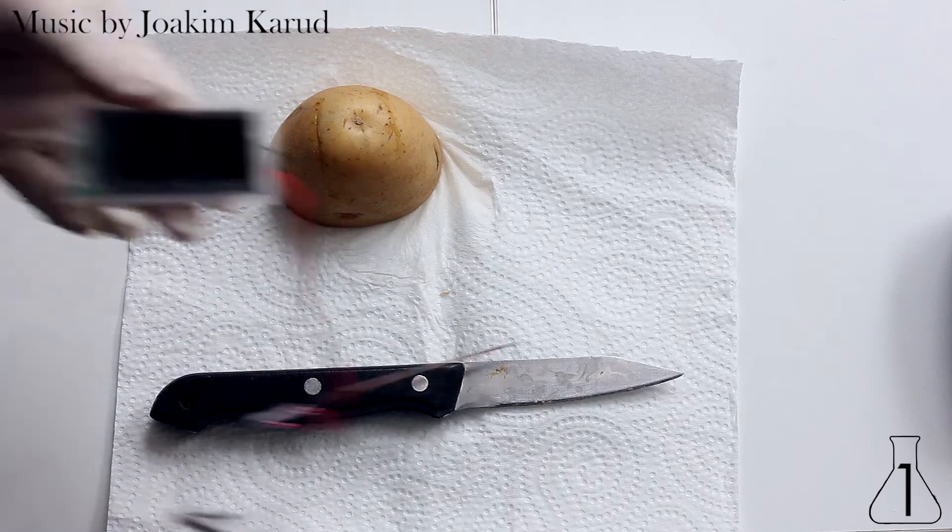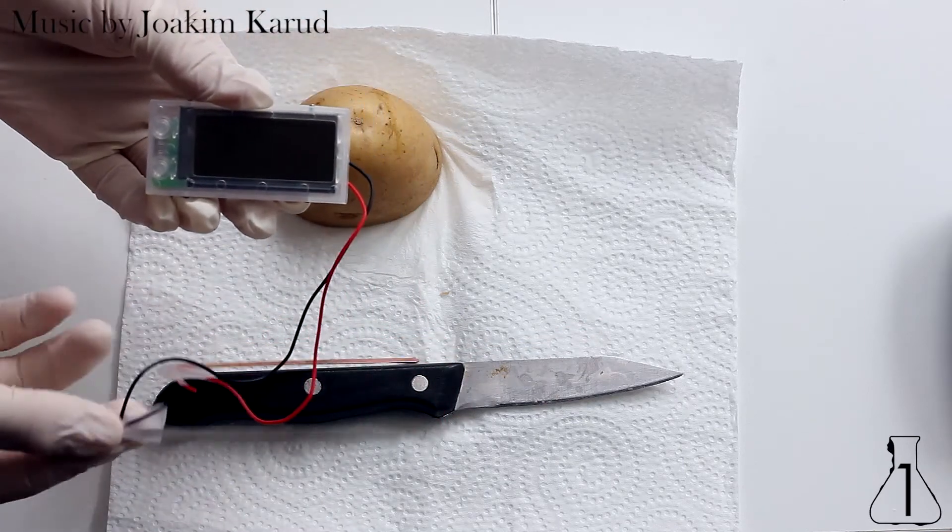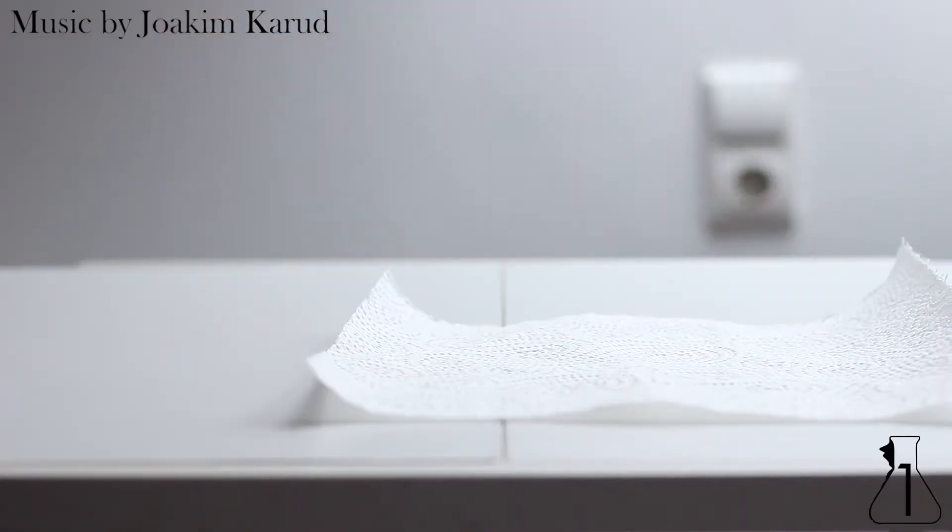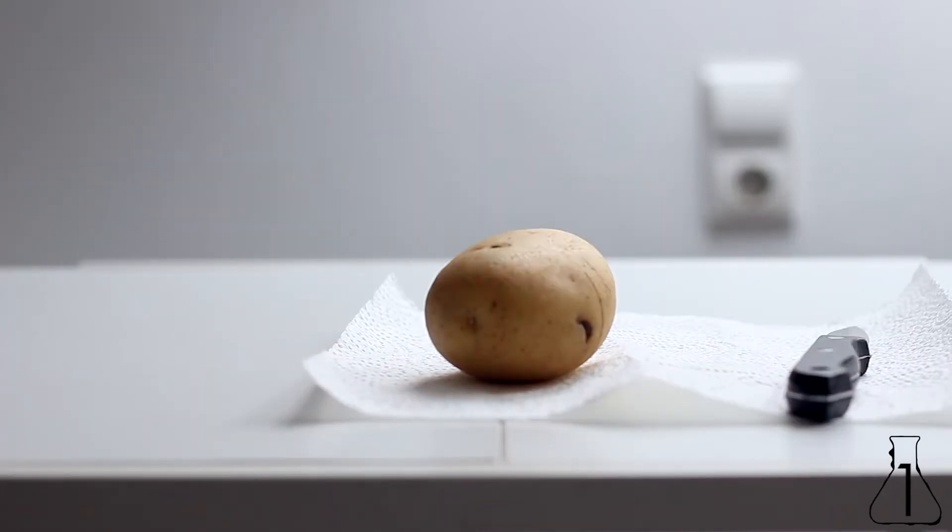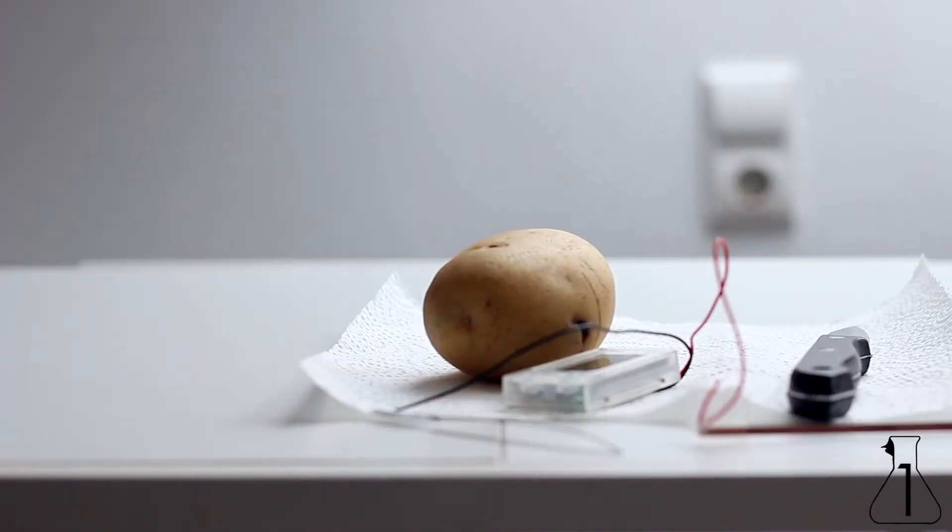We are going to build a galvanic cell using only a potato, a zinc sheet and a copper sheet. We will need a potato, a knife and a digital clock to see if the experiment works.